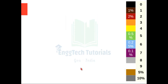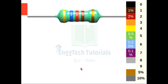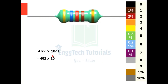Next we will see an example of a 5 band resistor. In this, the first three colors represent the digit, the fourth color represents the multiplier, and the last color represents the tolerance level. So the first color is yellow — yellow corresponds to digit 4, so we write 4. The next color is blue, and blue corresponds to digit 6, so we write 6. The next color is red, and red corresponds to digit 2, so we write 2. The multiplier is brown, and brown corresponds to digit 1, so we write into 10 raised to 1 — that is 462 into 10.